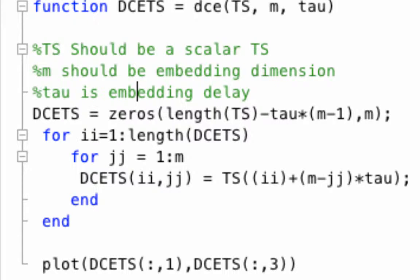It's just two nested for loops that walks over the time series and places the elements in a matrix in the correct order.